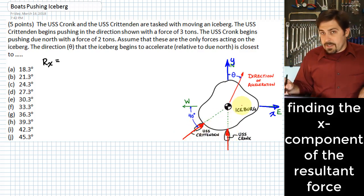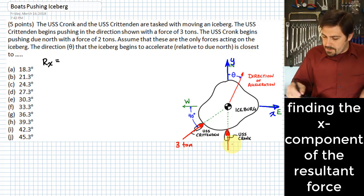The one from the Crittenden is the only one that actually has an x component, and that starts out being a three ton force that we see over here, whereas the USS Cronk is a two ton force that we see going up in that way.